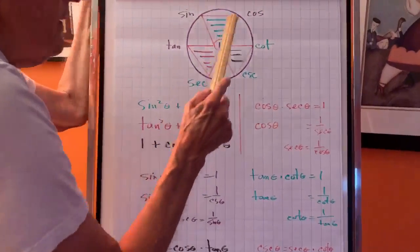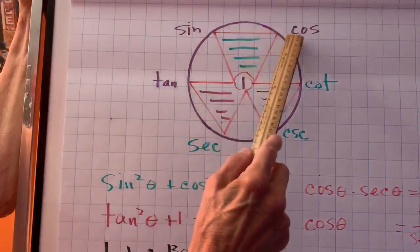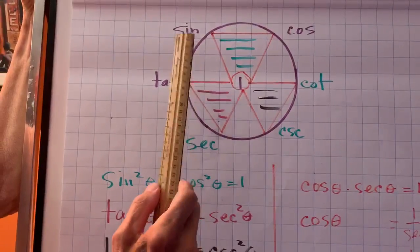So cosine is equal to sine times cotangent. Sine is equal to cosine times tan.